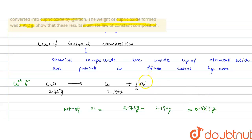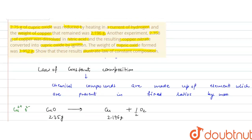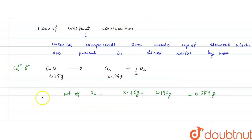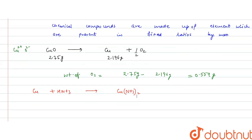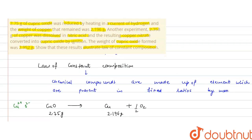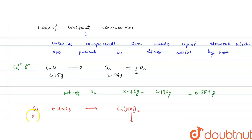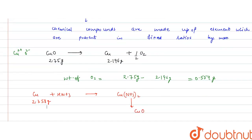In the second method, copper was dissolved in nitric acid to form copper nitrate, and from copper nitrate, cupric oxide was formed by ignition. The weight of copper taken initially was 2.358 grams, and the cupric oxide formed weighed 2.952 grams.